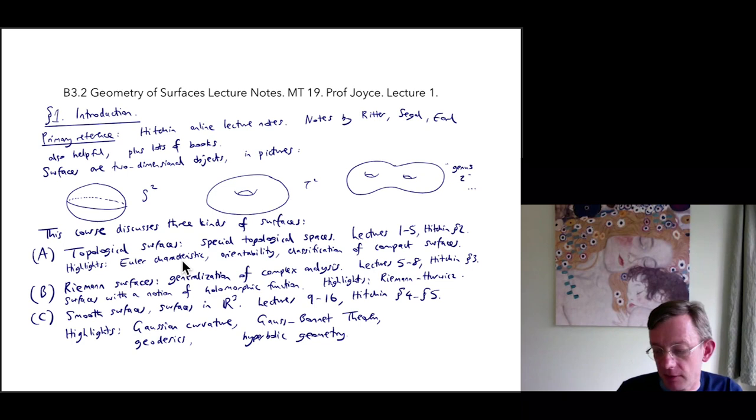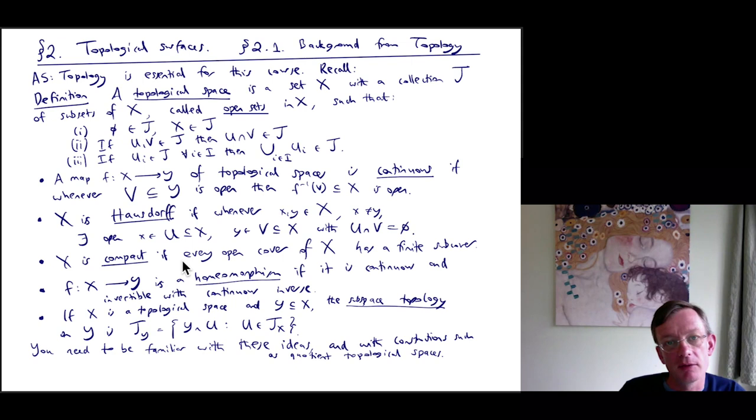So let's move on to section two, which will be about topological surfaces. We'll begin with section 2.1 on the background from topology. So A5 topology is an essential first course. If you don't know about topology, then I suggest that you pause at this point and go away and find out.